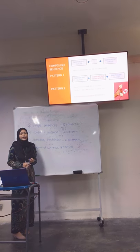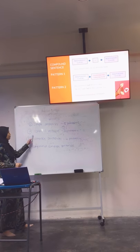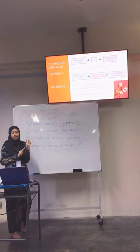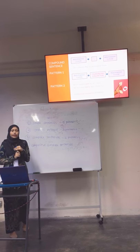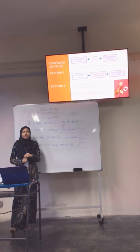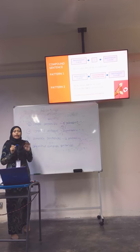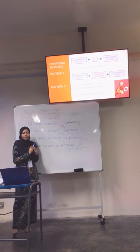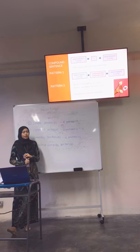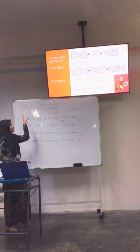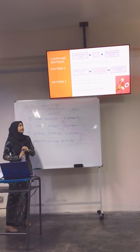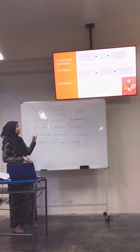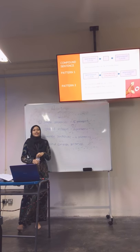Moving on to the second type of sentence, which is compound sentence — we have three patterns. Pattern 1 consists of independent clause plus semicolon plus independent clause. An independent clause is a clause that can stand alone, having a subject and verb. For example: 'I love orange; they are my favourite fruits.' Both can stand alone — I is the subject, love is the verb, orange is the direct object. They is the subject, are is the verb, my favourite fruit is the predicate.